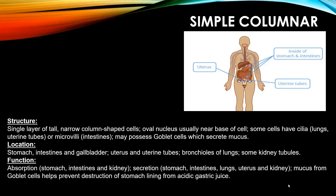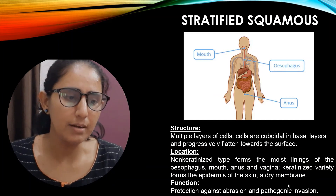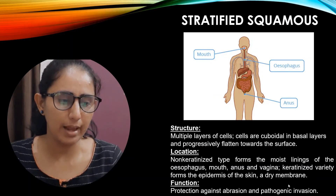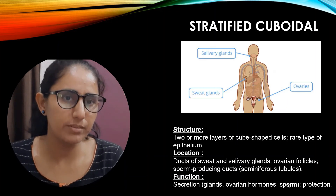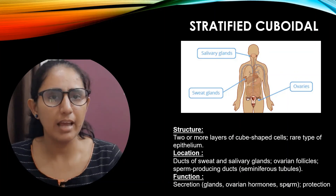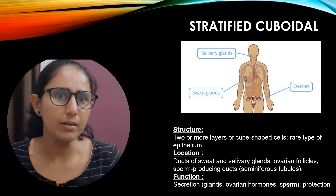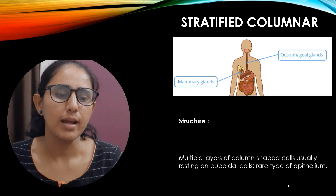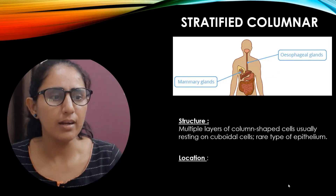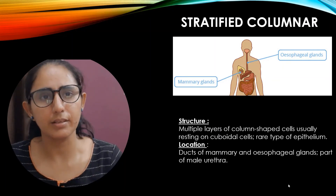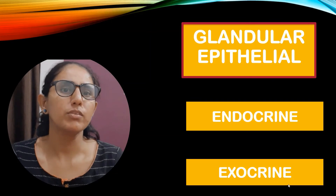Stratified squamous epithelium is multi-layered and present in the mouth, esophagus, and anus. Stratified cuboidal has two or more layers of cube-shaped cells — a rare type of epithelium present in salivary glands, sweat glands, and ovaries; its basic function is secretion and protection. Stratified columnar has multiple layers of column-shaped cells, present in mammary glands and esophageal glands; its basic function is protection and limited secretion.